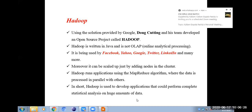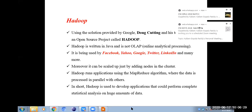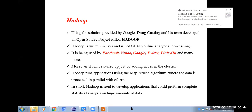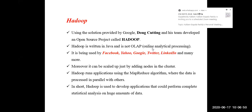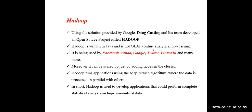Previously we have seen the Google File System. Now we have to see another concept called Hadoop. The basic point about Hadoop is that it was purely developed based on the concept of the Google File System. The Google File System was developed for the internal working of Google's own applications. Based on that concept, Hadoop was developed by the Apache people. The first point is: Hadoop is an open source framework.